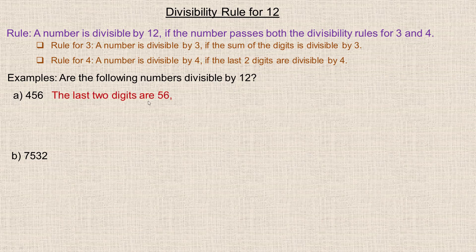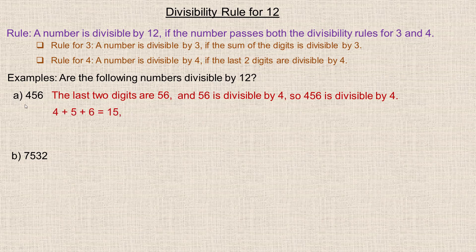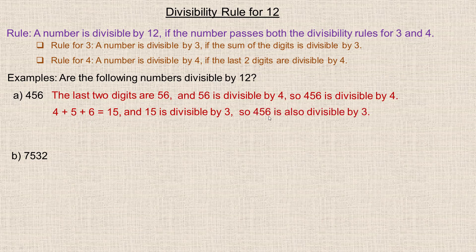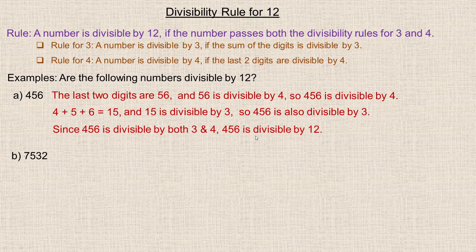The last two digits are 56, and 56 is divisible by 4 — 14 times 4 is 56. So 456 is divisible by 4. Now let's check for 3: we add 4, 5, and 6. So 4 and 6 is 10, and 5 more makes 15. And 15 is divisible by 3 — it's 3 times 5. So 456 is divisible by 3 as well. It's divisible by both 3 and 4, so 456 is divisible by 12.